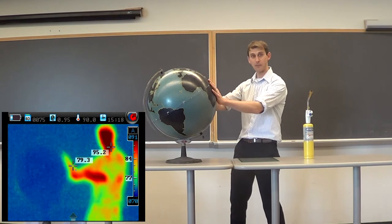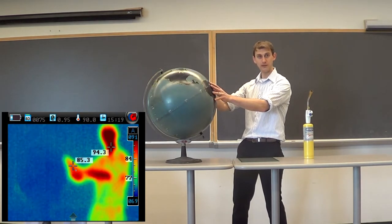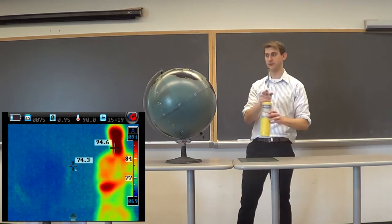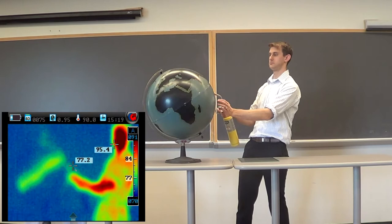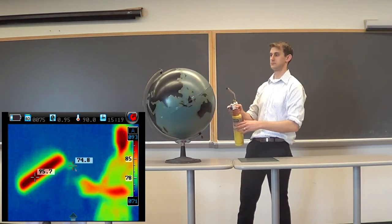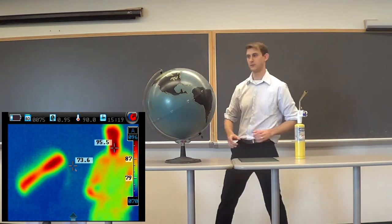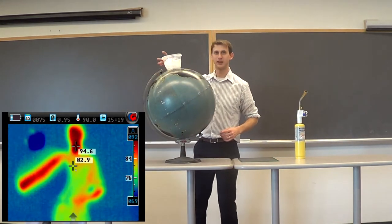So we're going to heat up our model planet here, which is made out of metal. It's a metal globe with the blowtorch. We'll give it a nice polar ice cap on top of Greenland as well.